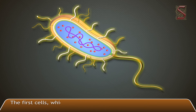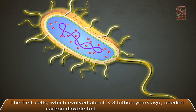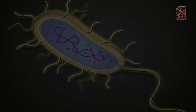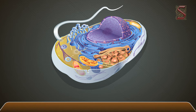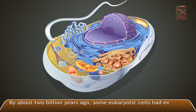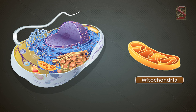Now let us learn how the process of respiration evolved in living organisms. The first cells, which evolved about 3.8 billion years ago, needed carbon dioxide to live and not oxygen. They were able to get the carbon dioxide they needed from the oceans they lived in. By about 2 billion years ago, some eukaryotic cells had evolved that needed oxygen to live, as oxygen gave them more energy. Mitochondria developed in the cells to break down oxygen for them.